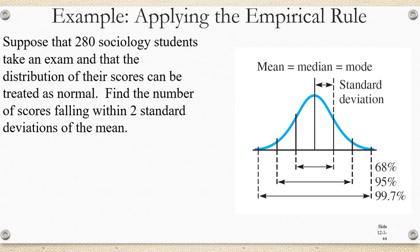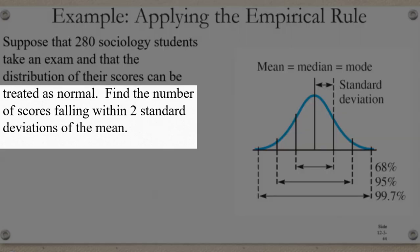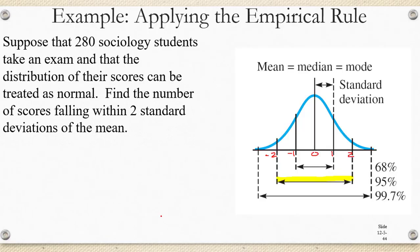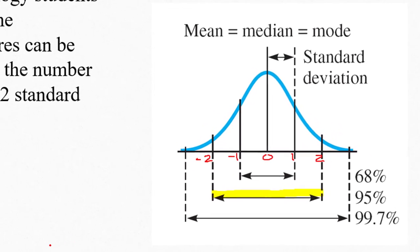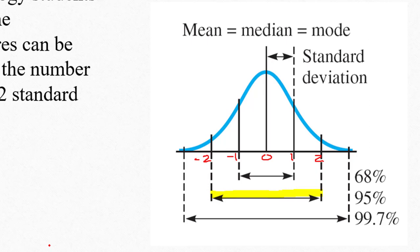It's important to note that we can only use the empirical rule because we're told that the distribution is normal. Since we're talking about scores falling within two standard deviations of the mean, we are referring to data values that have z-scores between negative two and two. And according to the empirical rule, 95% of the data values in a normal distribution lie in that interval.